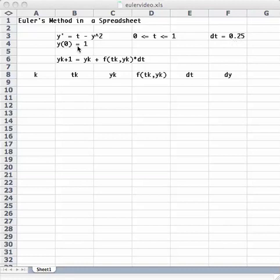The initial condition is 0 for t and 1 for y. And Euler's method basically says that the next y value is equal to the current y value, plus the slope times the change in time.